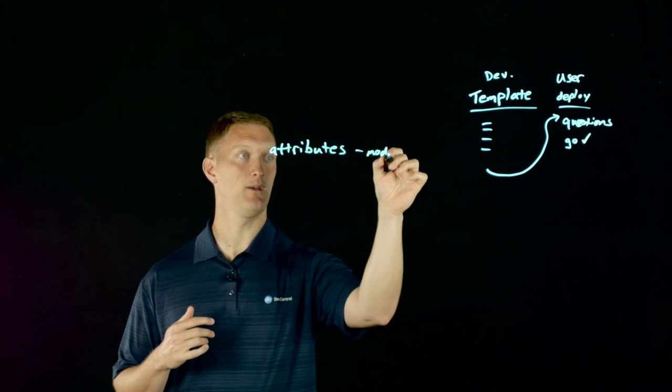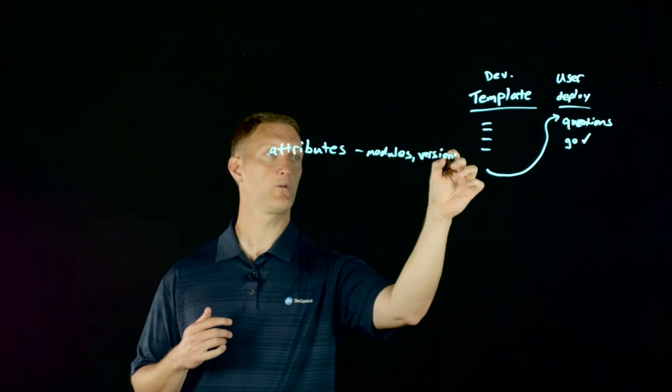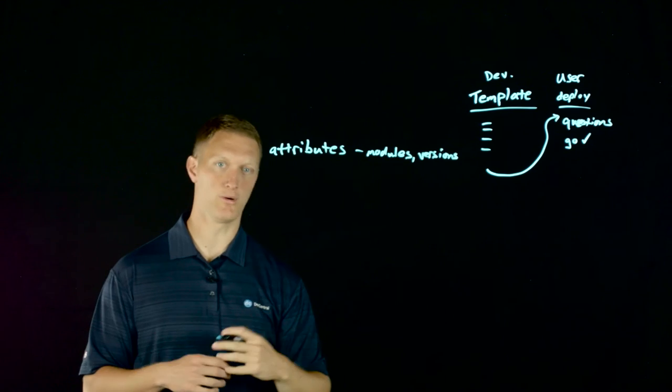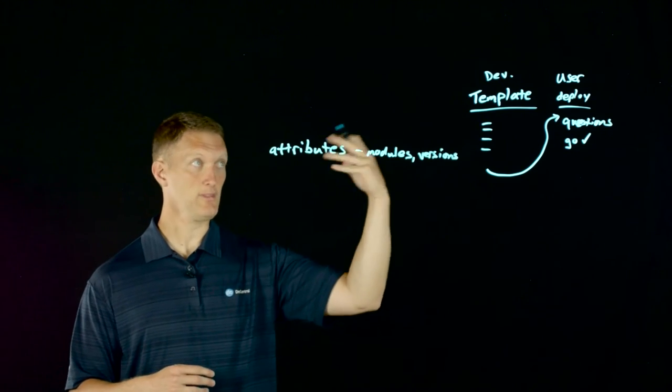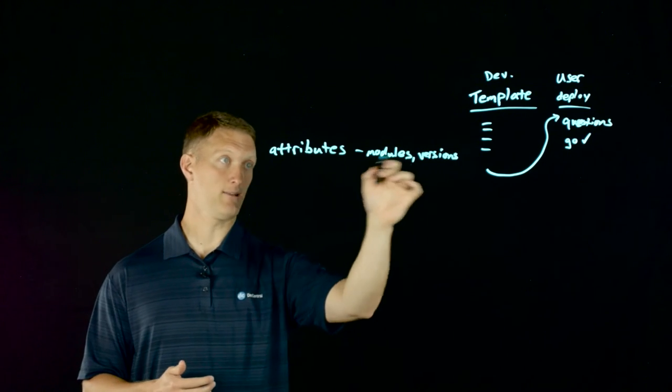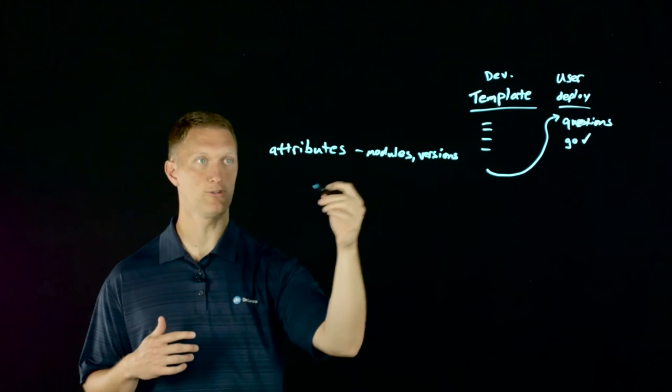What are the versions of BIG-IP that this would work with? Let's say this only works with version 12 and above or 11 and above. As you develop this template for whatever application service you're trying to deploy, you need to decide what modules do you need? LTM, APM, ASM, whatever it is, and then what version you need.